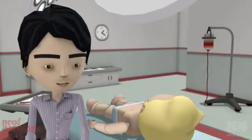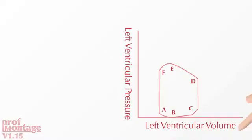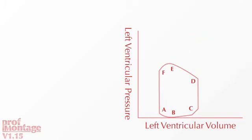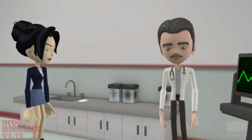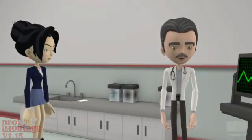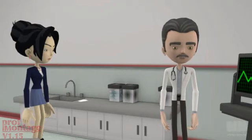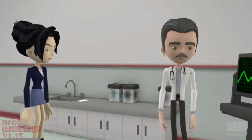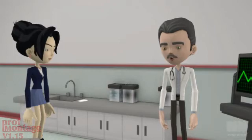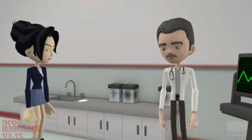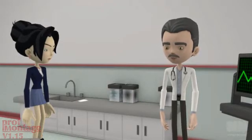So what's afterload? It's the resistance to ejection, manifesting as aortic systolic pressure. Reducing it can improve cardiac output. What do you mean, manifesting? Actually, tension is more than just pressure — it's wall stress, which incorporates both cavity pressure and wall thickness. But that's another lesson.